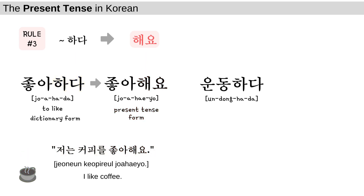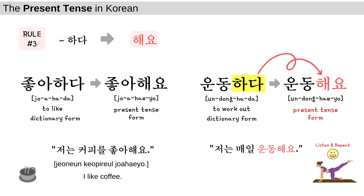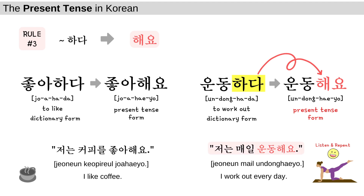Today's last word: 운동하다. 운동하다 is a verb which means to work out or to exercise. Since 운동하다 ends with 하다, you change 하다 into 해요: 운동해요. Let's take a look at the sample sentence: 저는 매일 운동해요 — I work out every day. 저는 매일 운동해요.